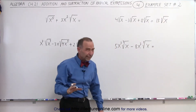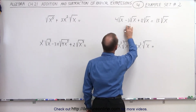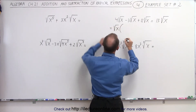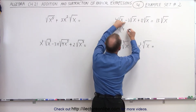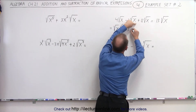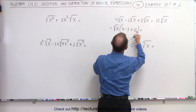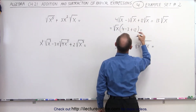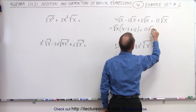Or, if you don't like that, what you could do instead is simply factor out the square root of x, so this is equal to the square root of x times what's left. We have 4 minus 3 plus 12, and of course when you combine them, 4 minus 3 is 1, plus 12 gives us 13, so we get 13 times the square root of x.